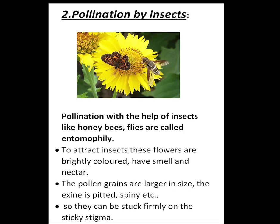Next, pollination by insects. Pollination with the help of insects like honeybees and flies is called entomophily. To attract insects, these flowers are brightly colored, have sweet smell and nectar. That is, the insect-pollinated flowers have brightly colored petals, sweet smell and nectar to attract the insects. The pollen grains are larger in size. The exine is pitted and spiny.